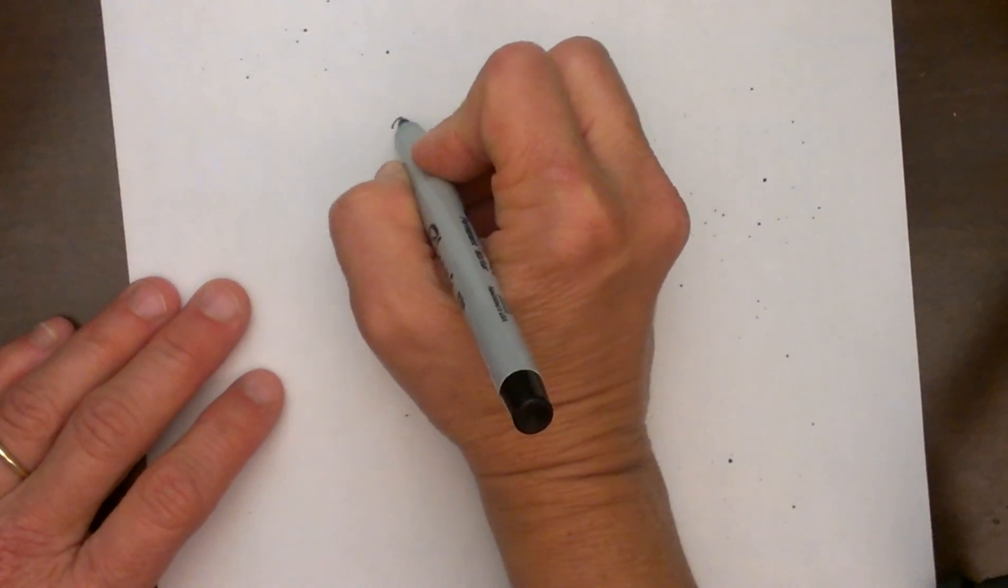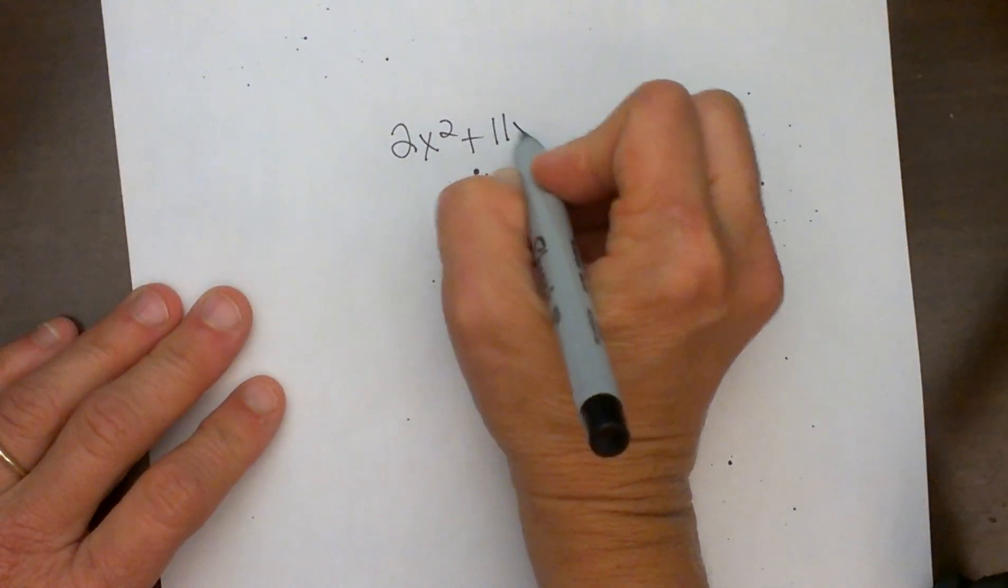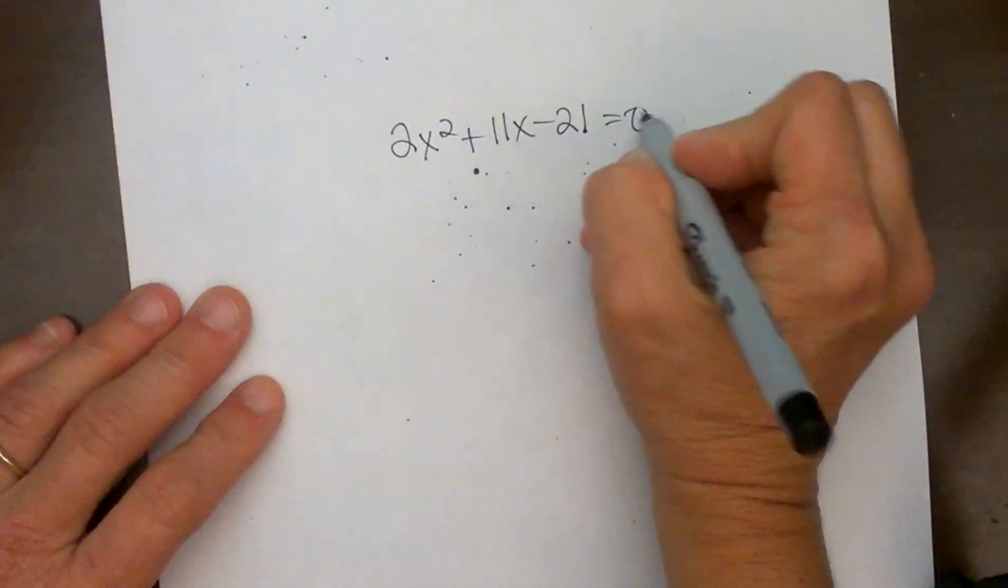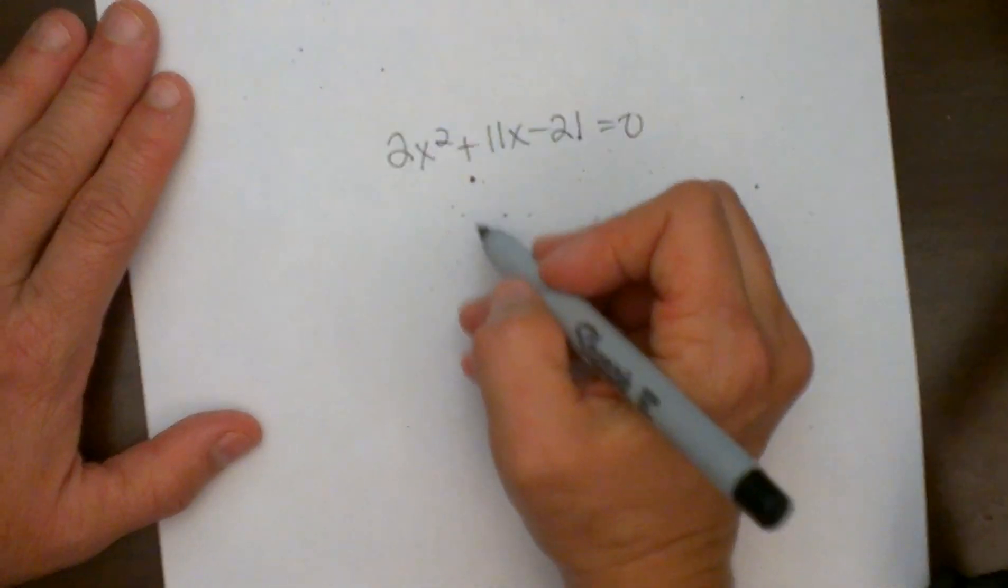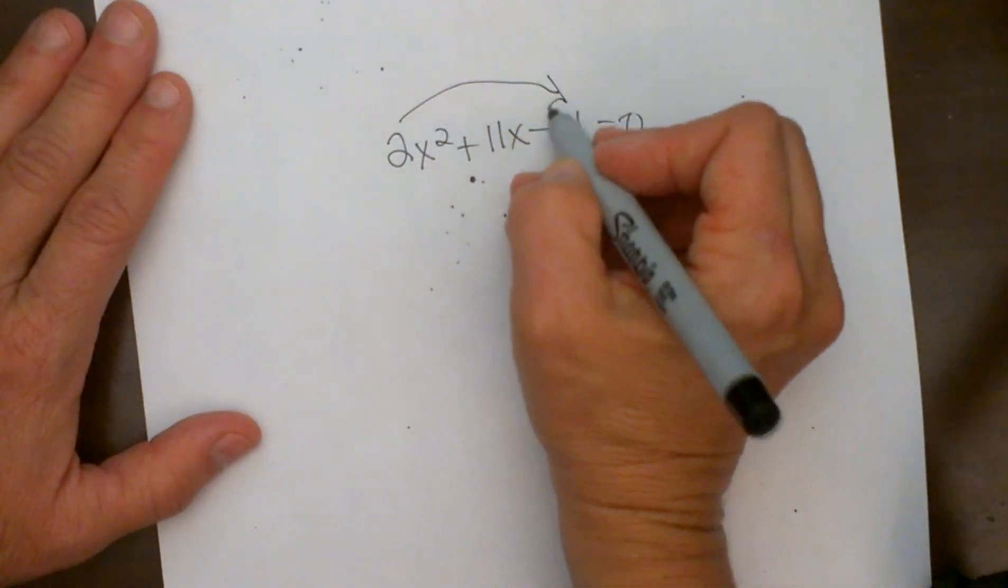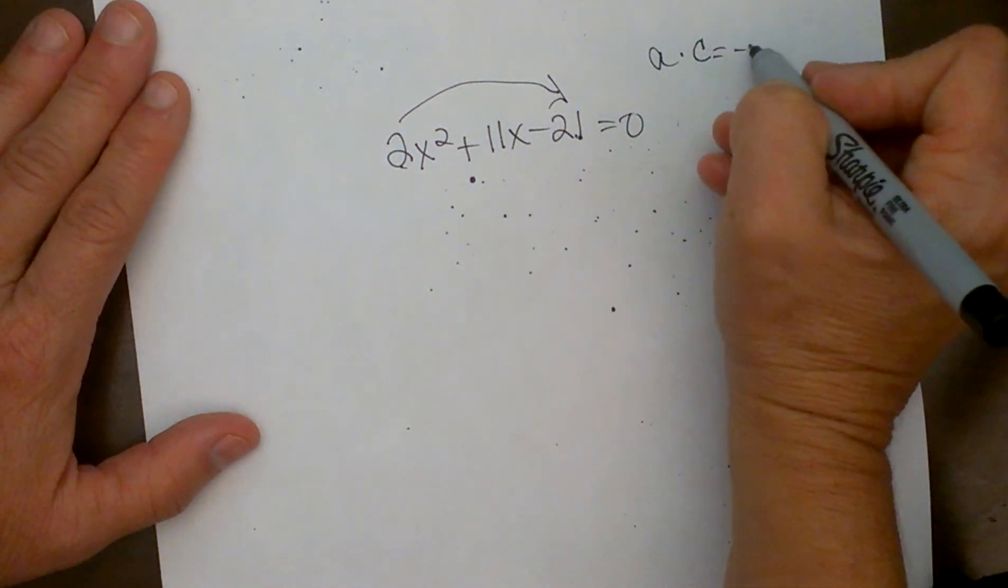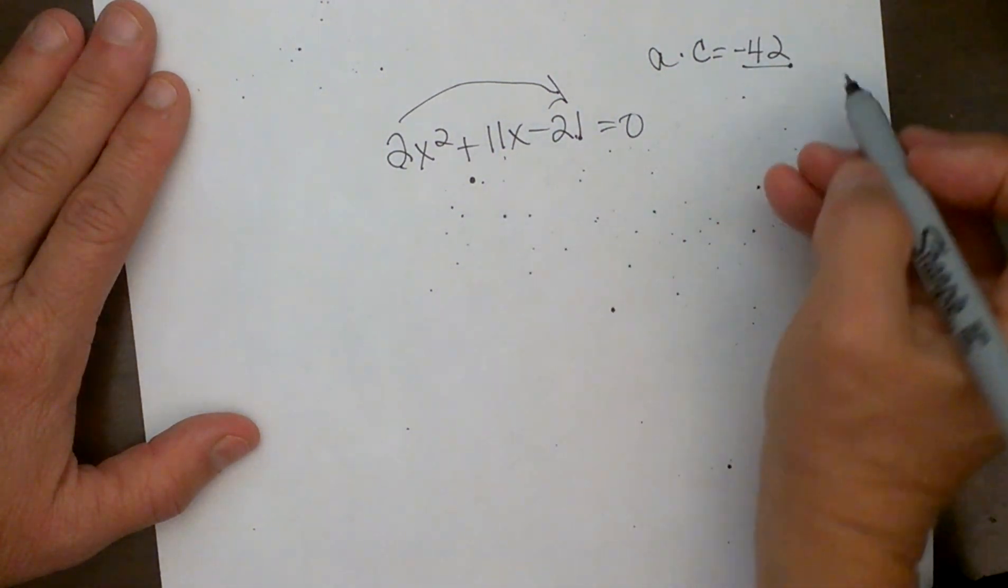Okay, so now I have two x squared plus eleven x minus twenty one equals zero. So I just divided that last term by two. Now I have to factor it. Let's see. I use the rainbow method or I multiply A times C. A times C gives me negative forty two. So what multiplies to negative forty two that has a difference of eleven?